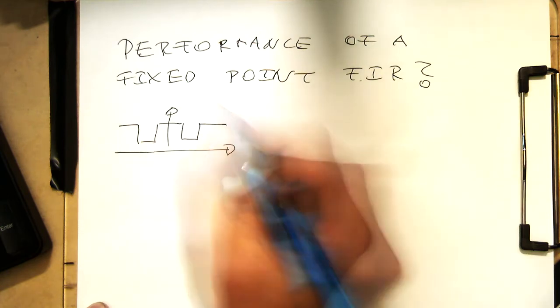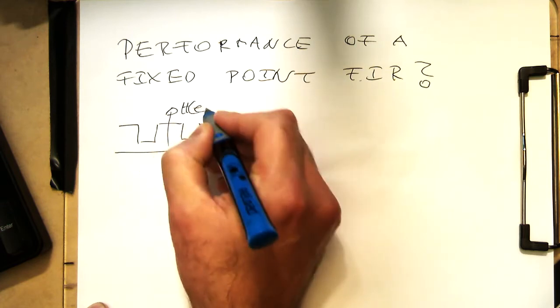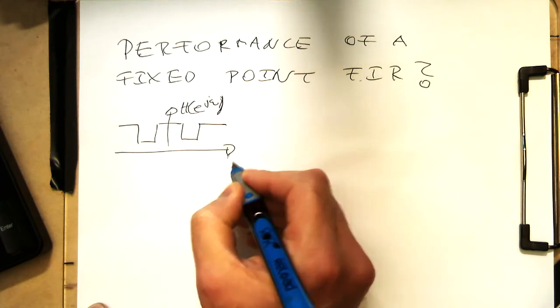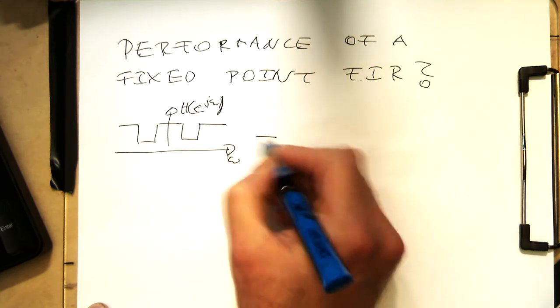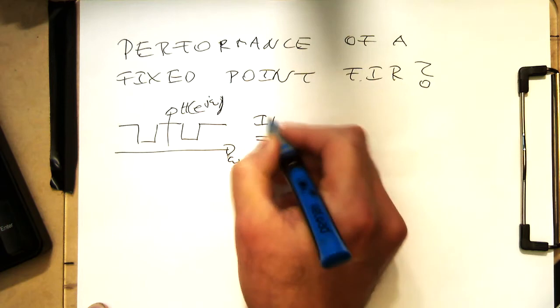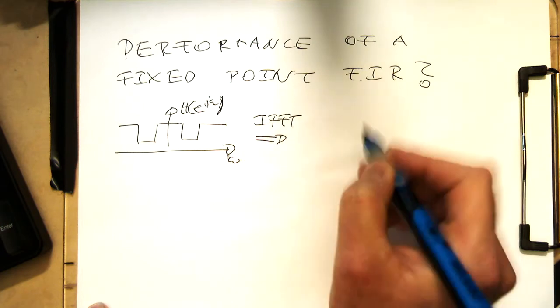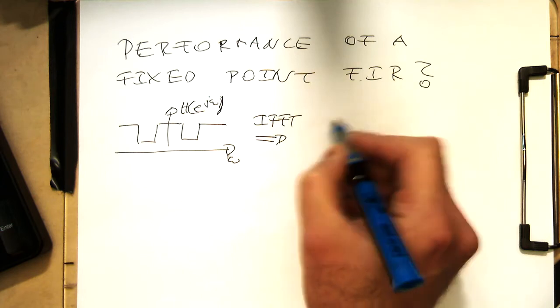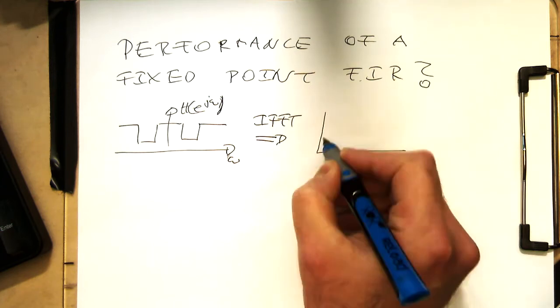That's here H to E J omega brackets here. That's our omega and then we do an inverse Fourier transform and we are getting our impulse response out of that here.